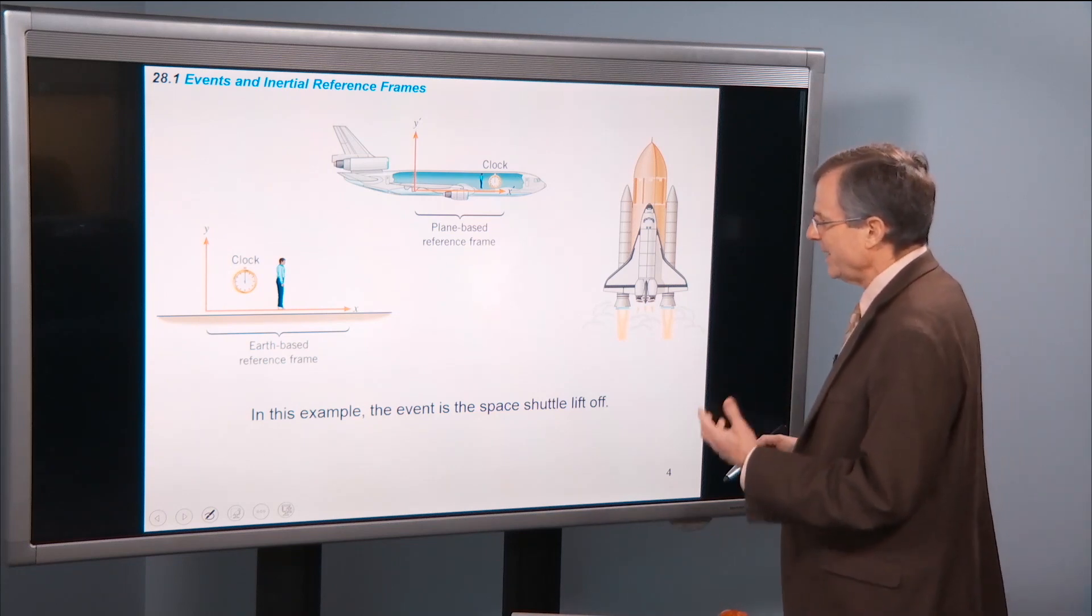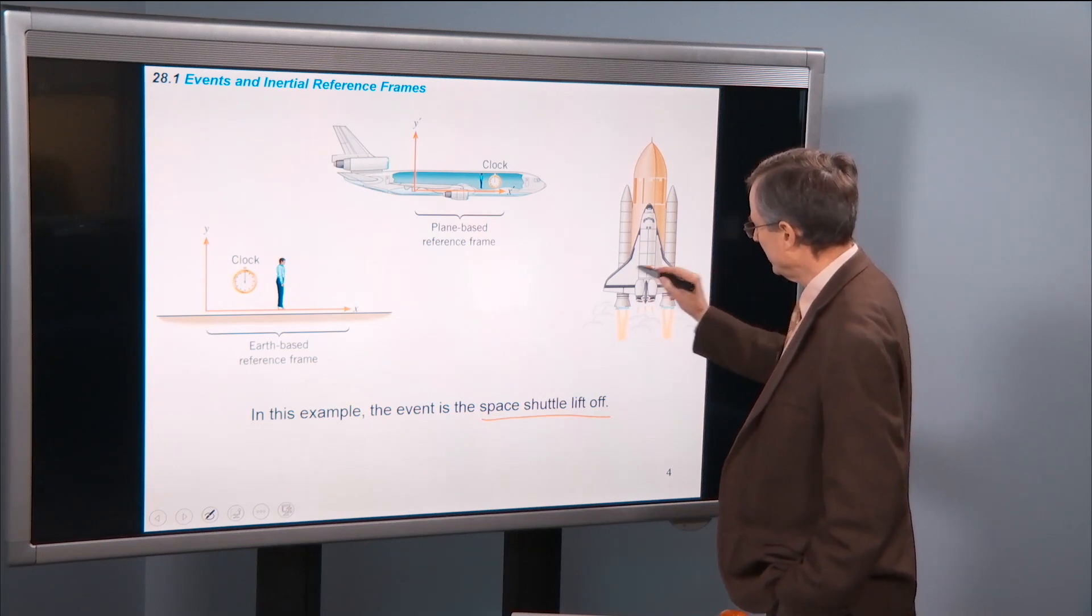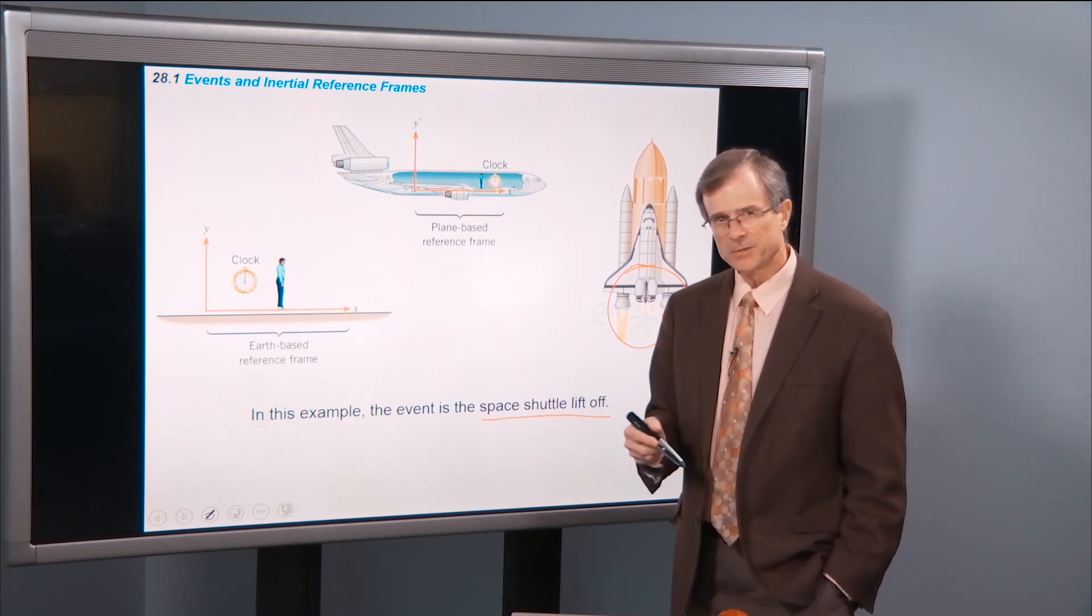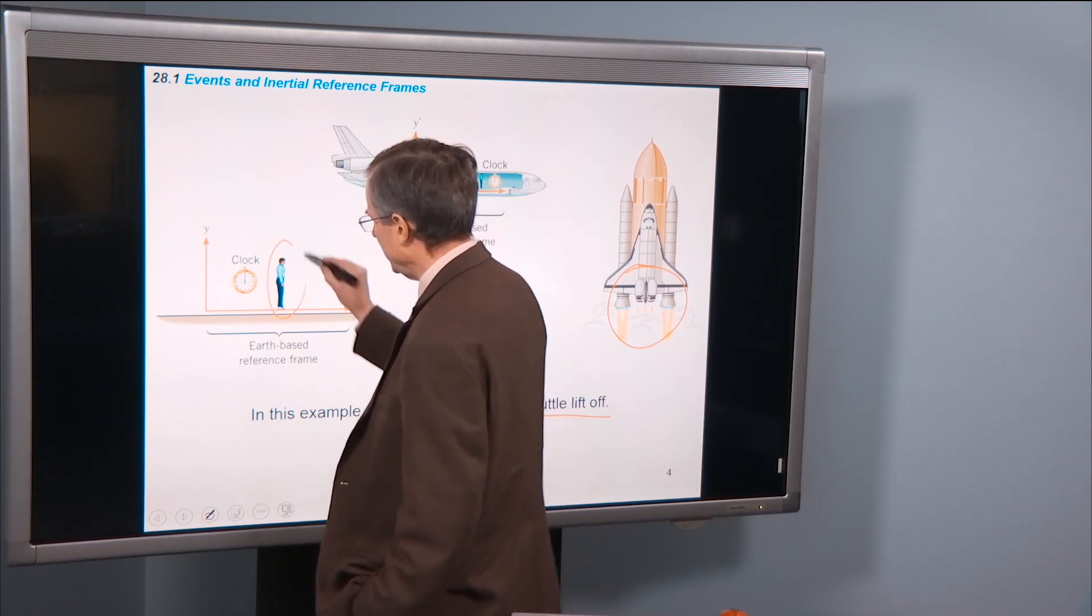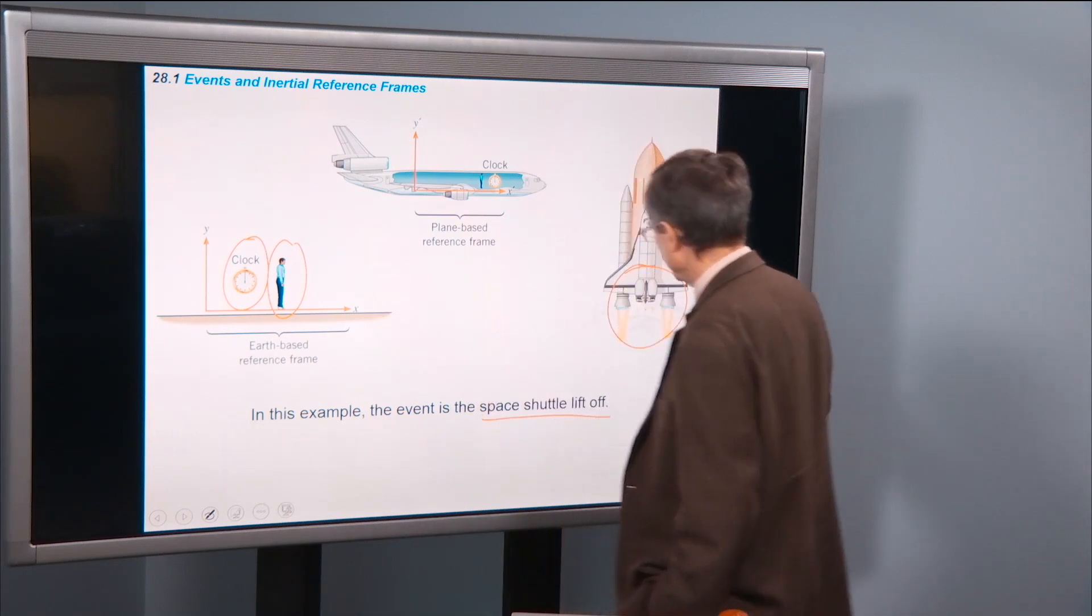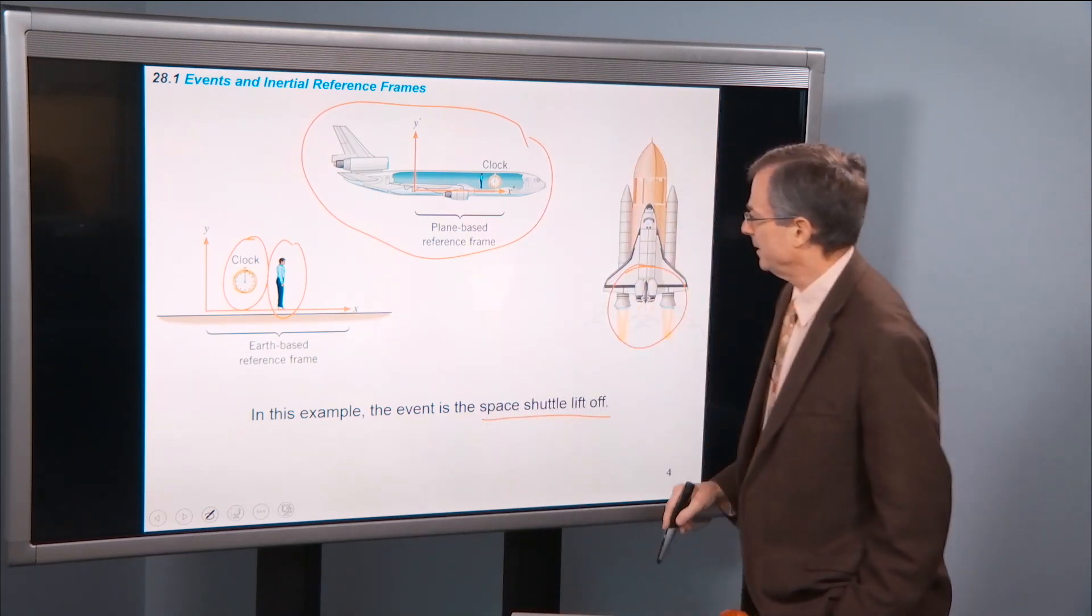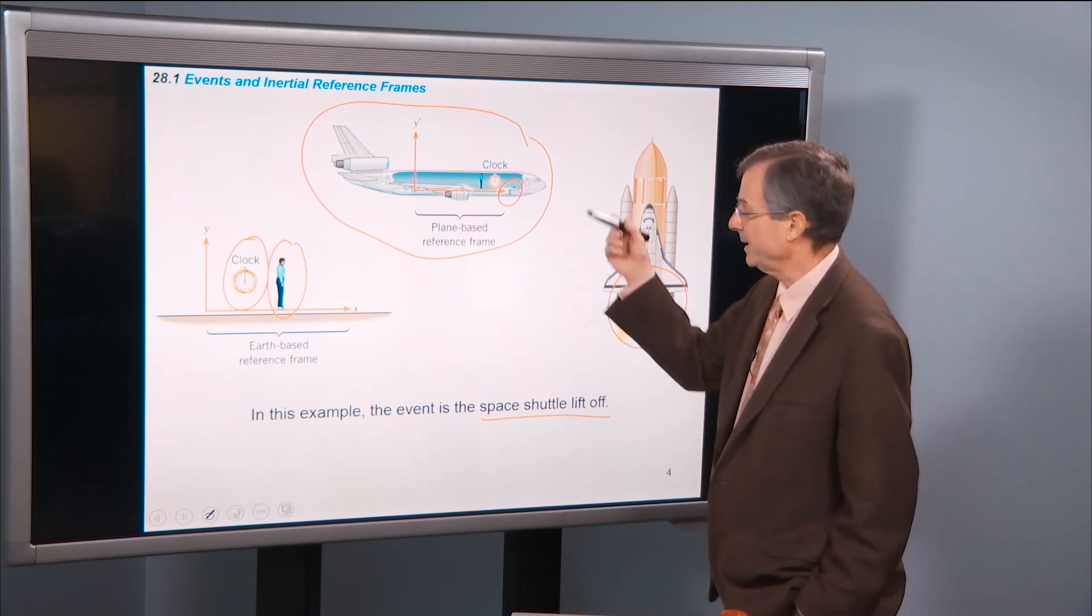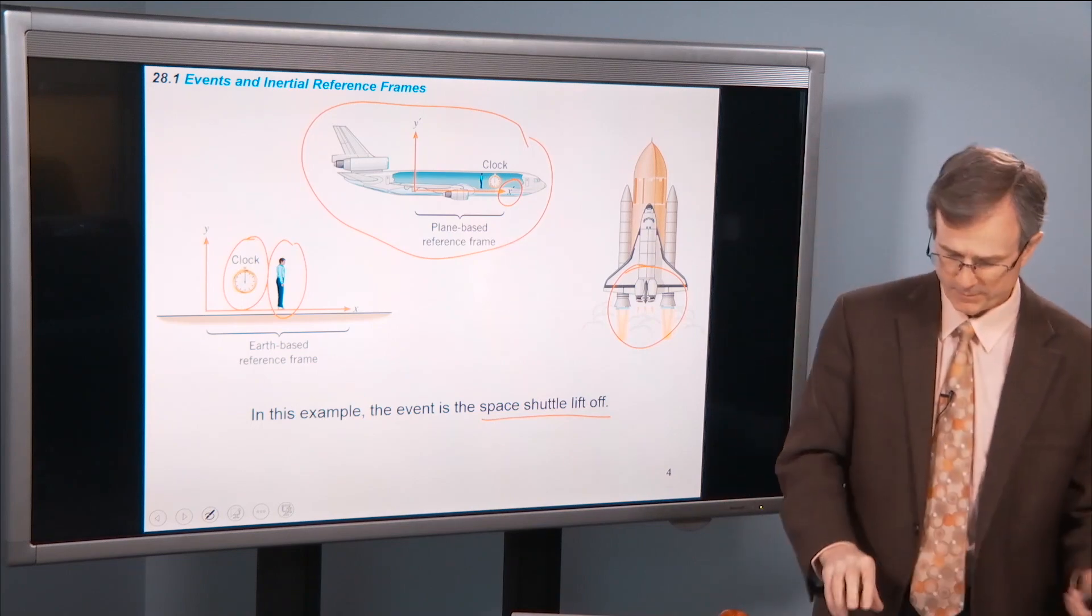Okay. Here's an event. A space shuttle liftoff. Where did it happen? It's right here. It lifts off from a certain place at a certain time. But different observers can see it differently. An Earth-based reference frame. So this guy is standing here with his clock and his coordinate system that are observing that liftoff versus a plane-based reference frame that has a different x-axis, x' and y' and z' and his own clock. So there's two reference frames that we can observe this same liftoff.